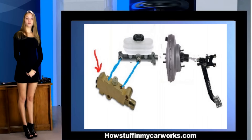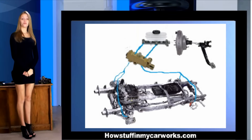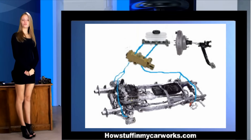The first part encountered by the hydraulic pressure is the brake proportioning valve. This part distributes the right amount of pressure to each wheel. Without this valve, the braking would be uneven and one or two wheels would lock while braking.